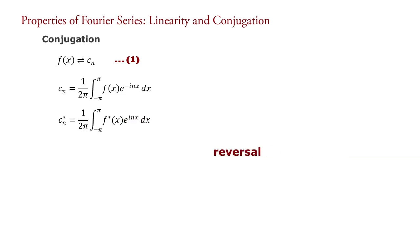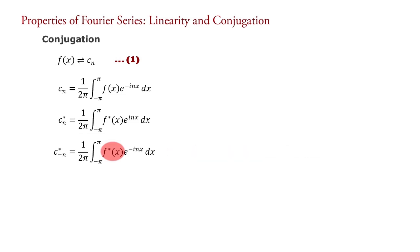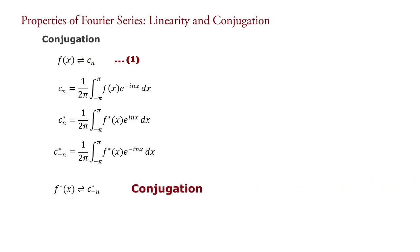So we take the reversal operation, that is substitute n equal to minus n in this equation. Hence it becomes c minus n star equal to 1 upon 2 pi integral minus pi to pi of f(x) star into e raised to minus inx dx. This is the formula for complex Fourier coefficient in which f(x) star is the Fourier signal and c minus n star is the complex Fourier coefficient. That is, c minus n star is the complex Fourier coefficient corresponding to Fourier signal f(x) star. It shows that when a Fourier signal f(x) is changed into its conjugate f(x) star, its complex Fourier coefficient cn is changed into the conjugate of c minus n. This is known as the conjugation property of Fourier series.